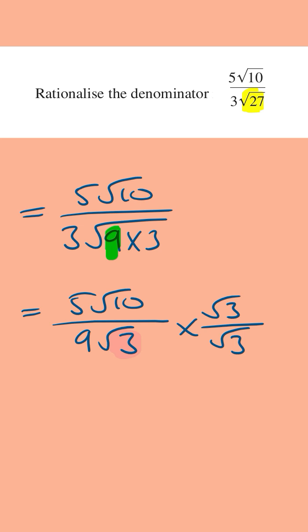From here we just multiply across now. So this is going to be 5 times root 30 over 9 times root 3 times root 3 is going to be 3.